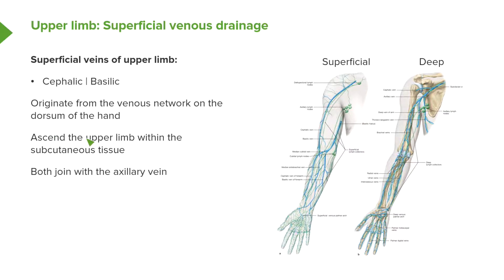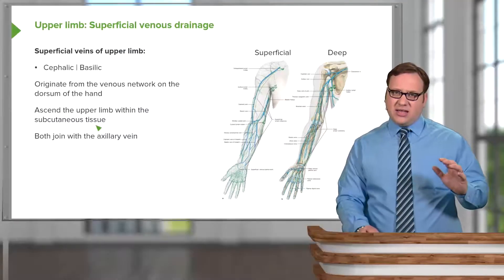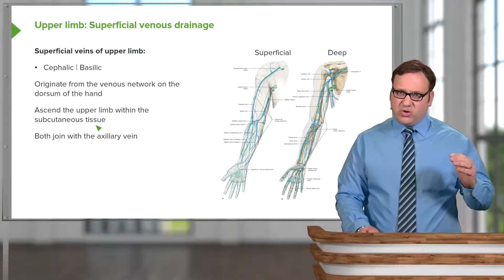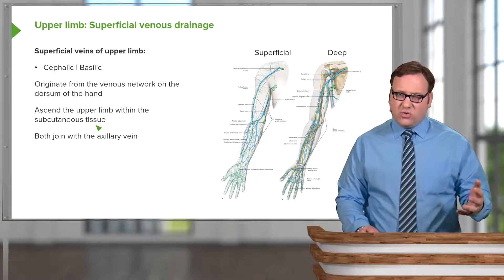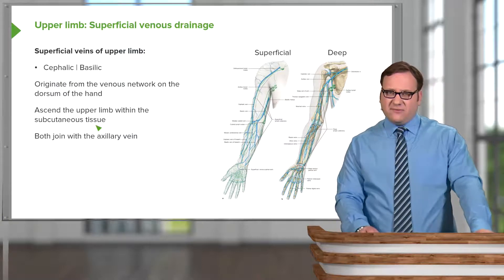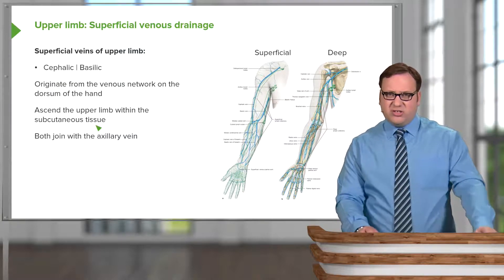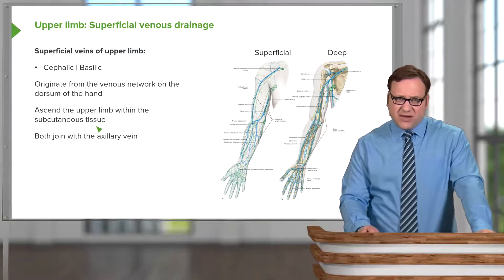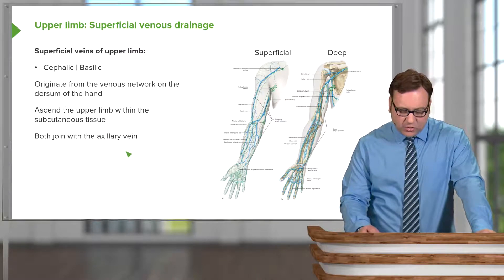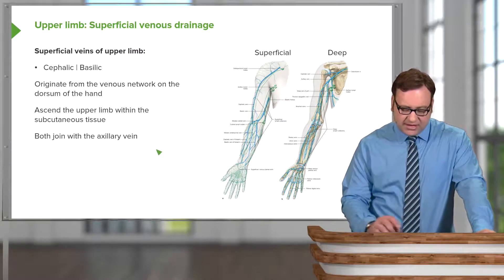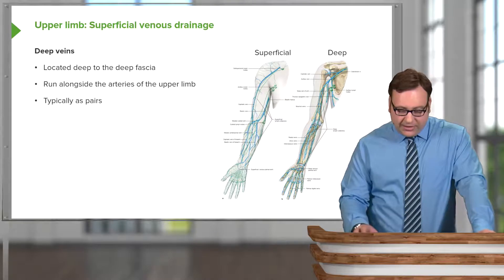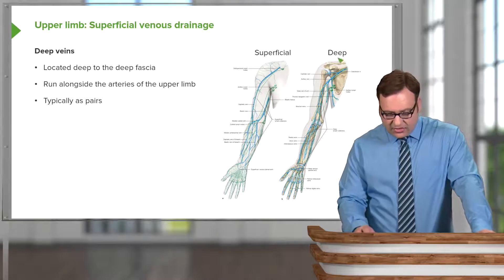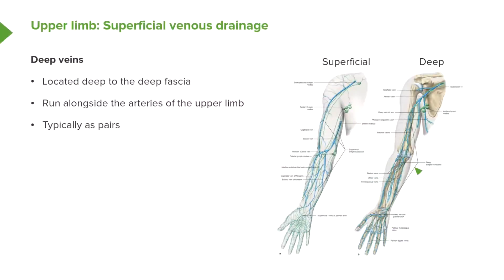These veins ascend up the upper limb within the subcutaneous tissue, running superficial to the deep fascia. On the opposite side of the diagram we can see the deep veins.